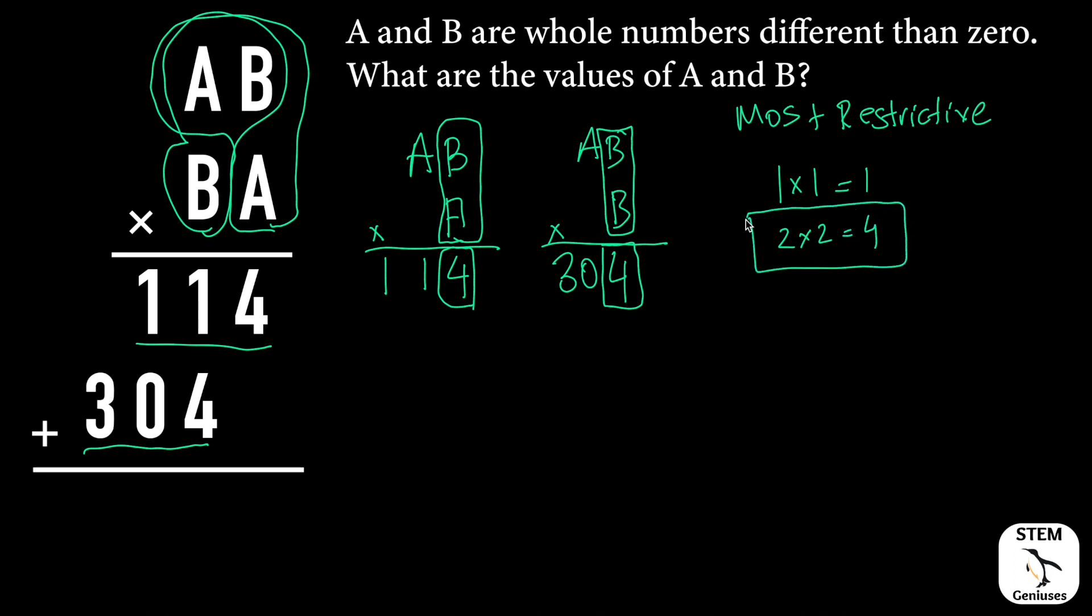Three times three is nine. Remember, we are checking the situations where B times B gives us four, so we are checking these situations in the list.